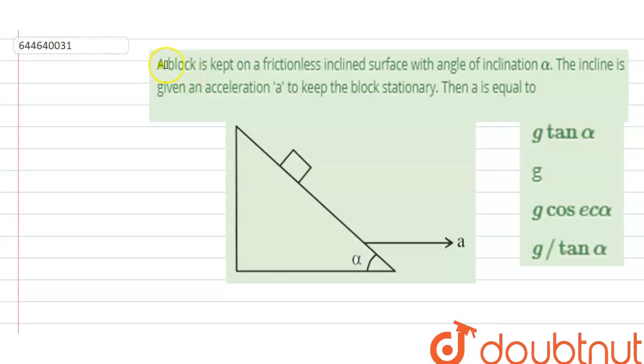Hello students, so the question is, a block is kept on a frictionless inclined surface with angle of inclination alpha. The incline is given an acceleration a to keep the block stationary. Then a is equal to.